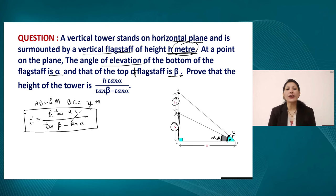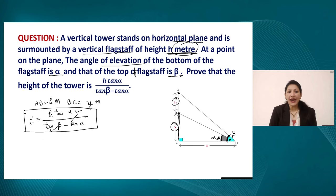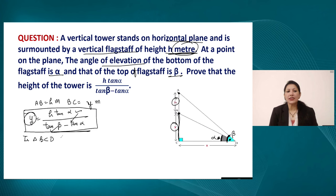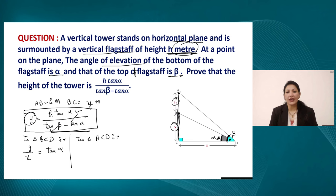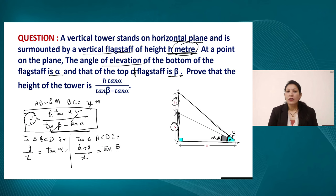To prove this, we calculate the values of tan alpha and tan beta and substitute into the right hand side. In triangle BCD, y upon x equals tan alpha. In triangle ACD, h plus y divided by x equals tangent beta.